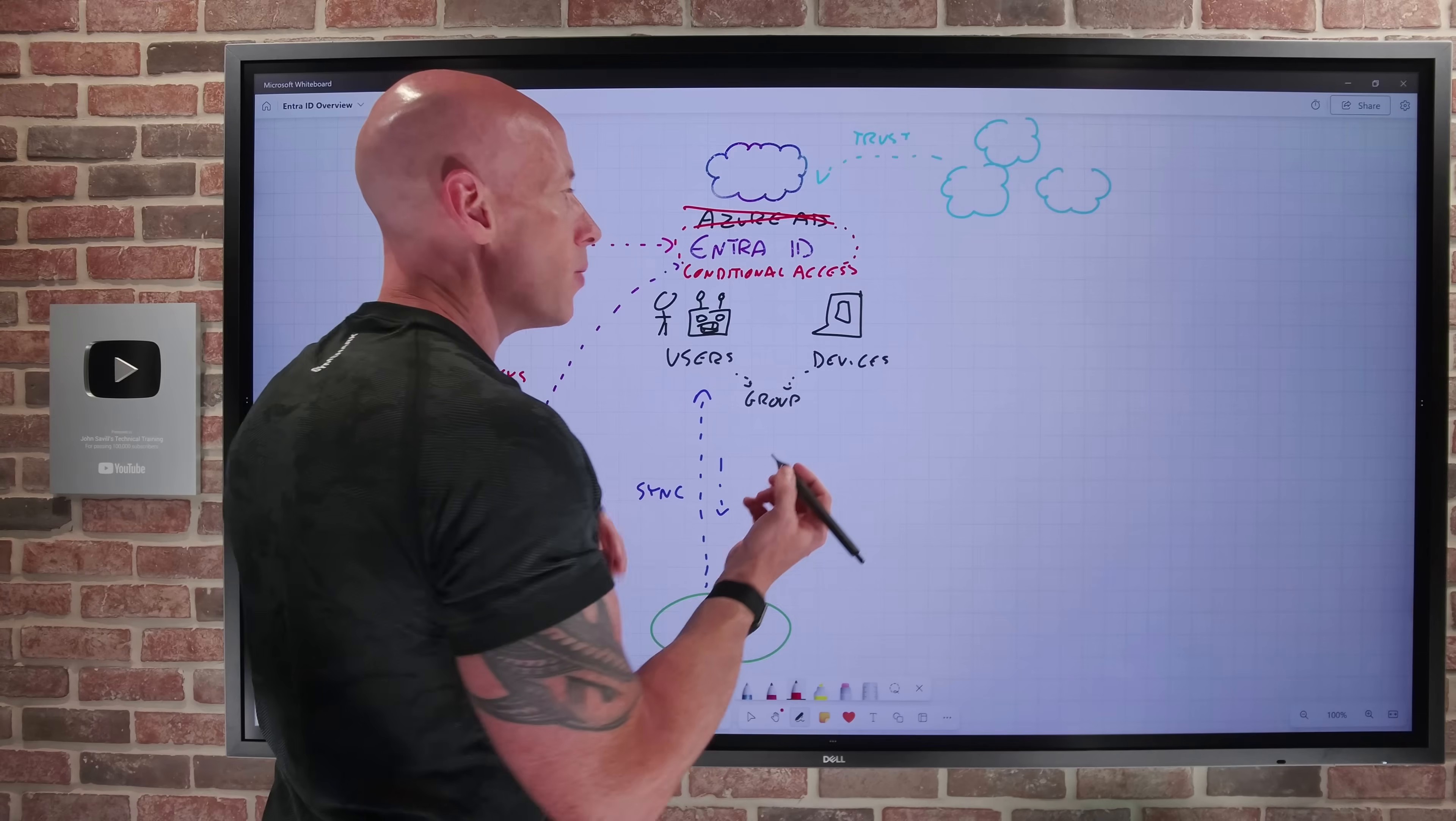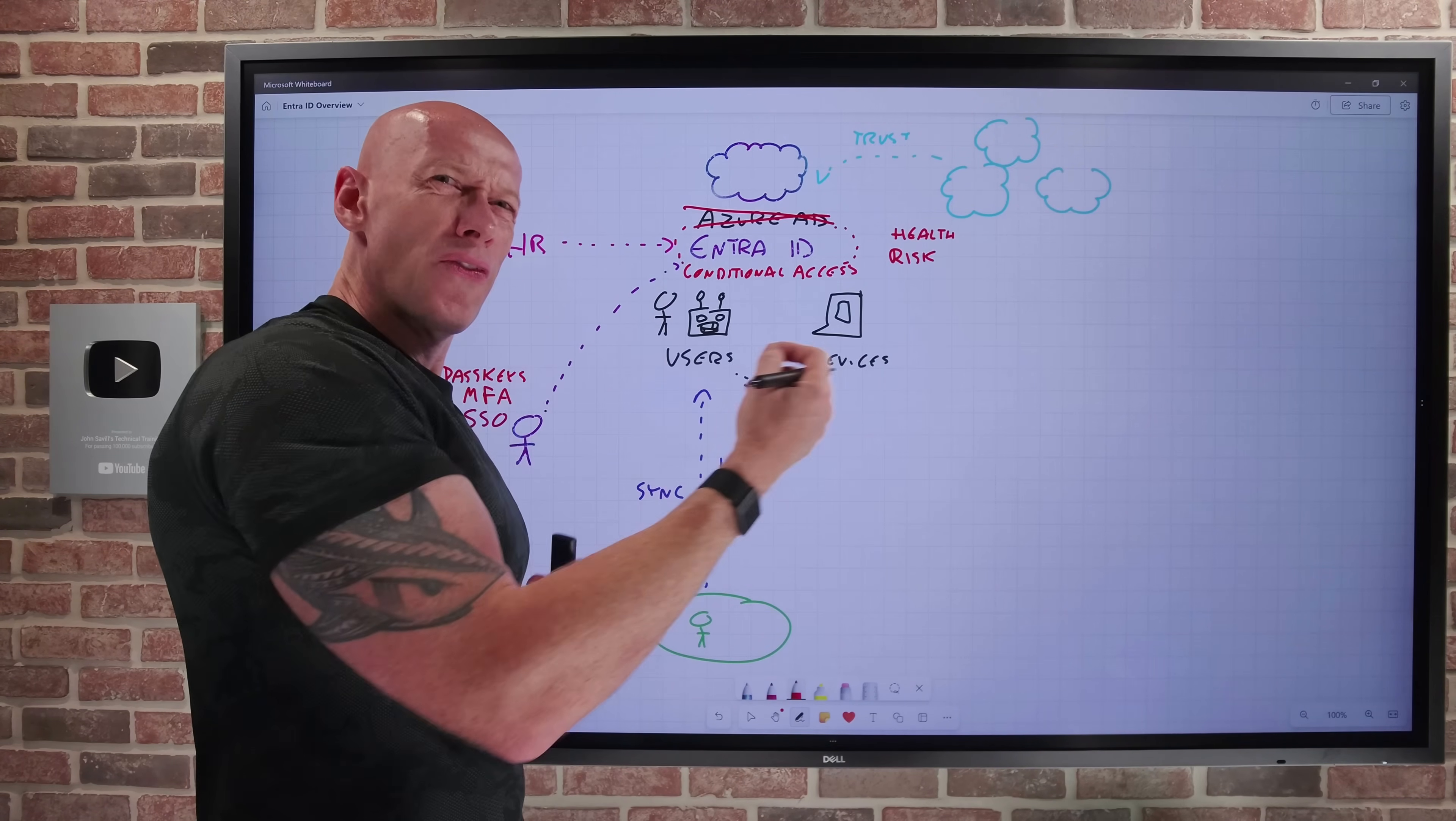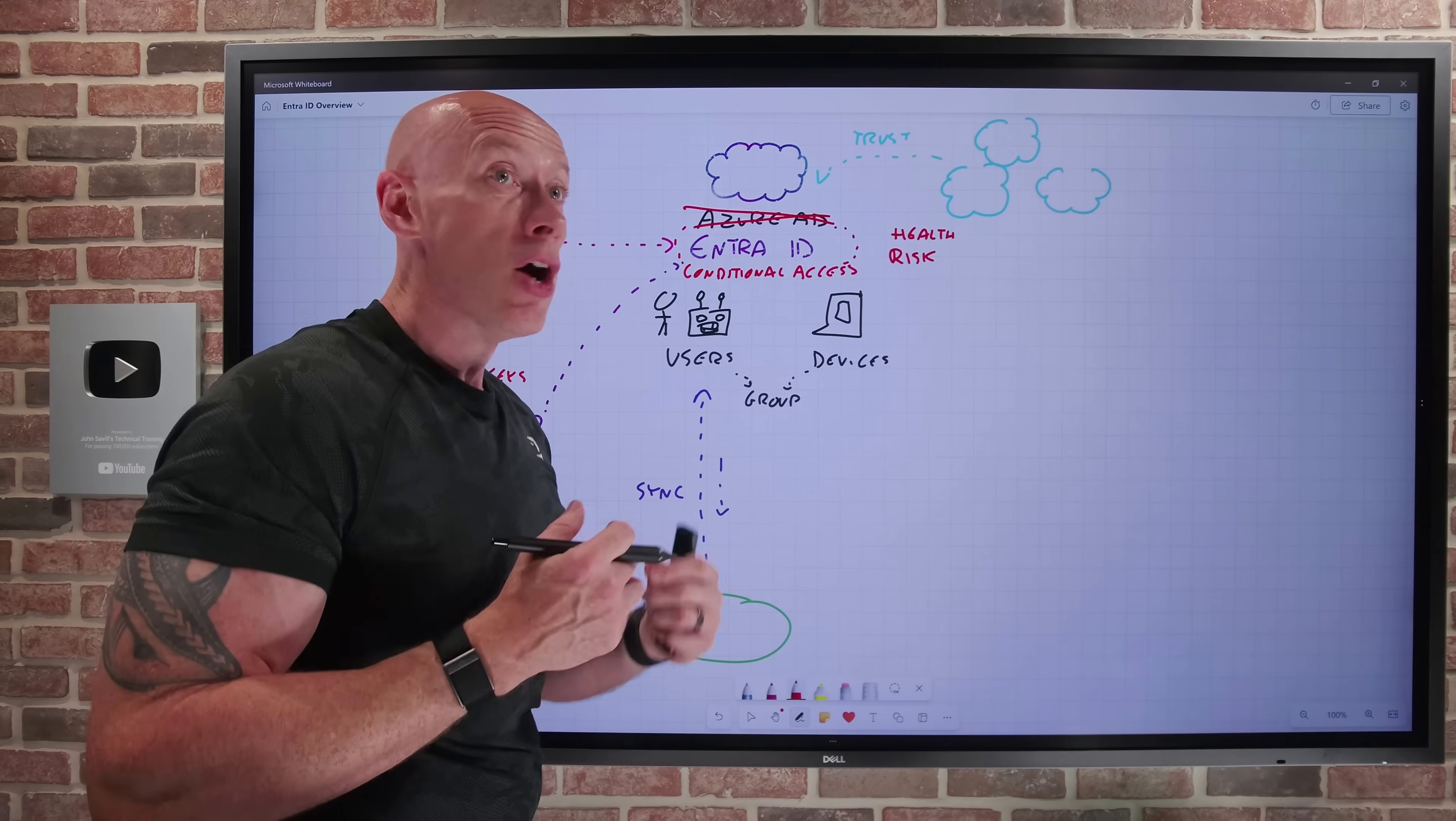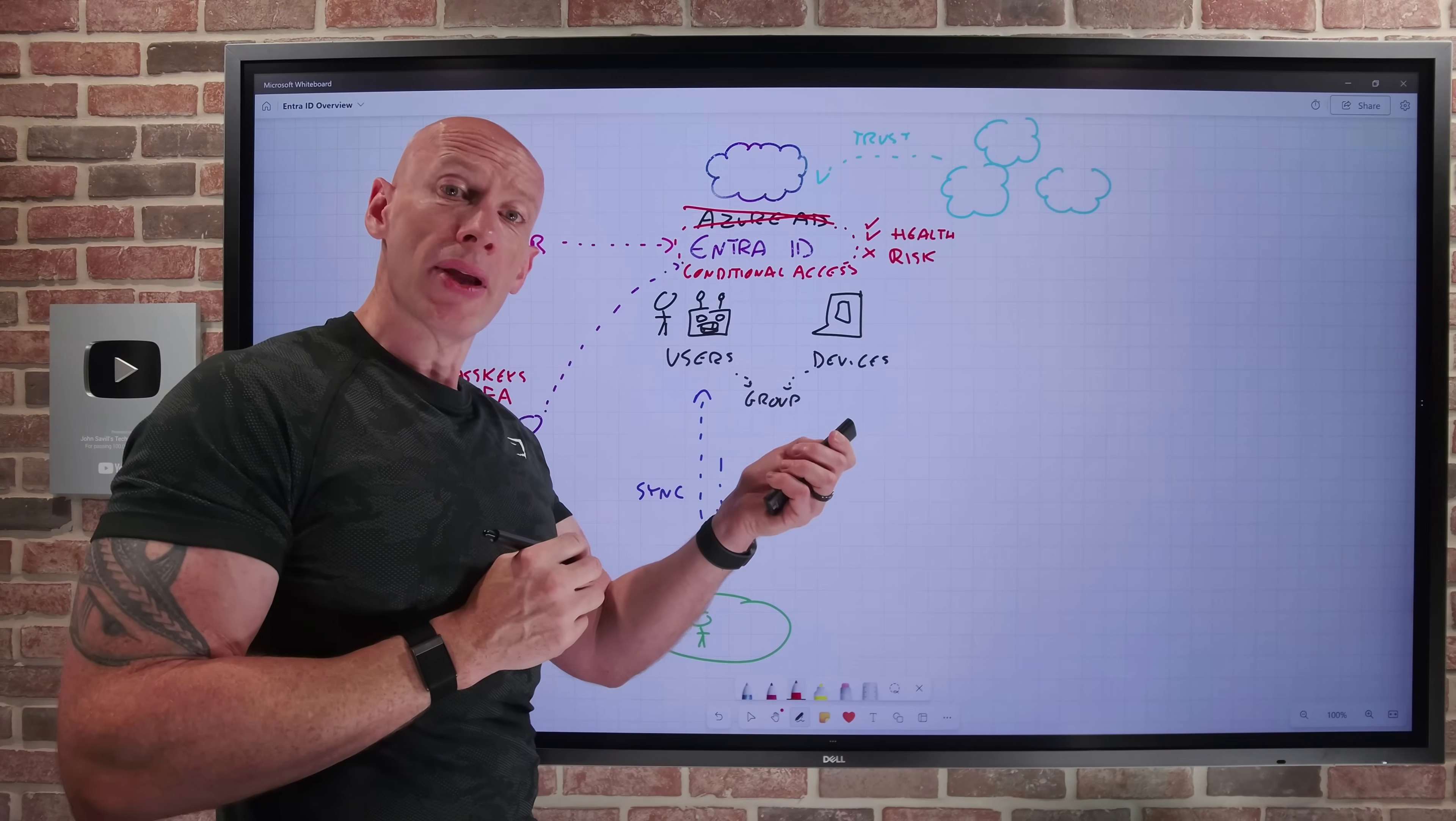So for example, I might want to do various checks on, is the device I'm using healthy? What is the risk? The risk based on what is normal for this identity to actually sign on. Where do they sign on? What times? What sort of apps do they use? AI, machine learning is learning what's normal for the user. What's the risk of the overall identity? Has it done other things in the past that seem a little bit suspicious? And so we have these various conditions that have to be met, and then I can have additional requirements.